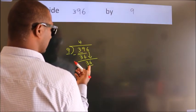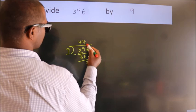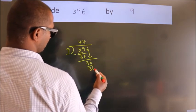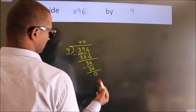When do we get 36? In the 9 table, 9 times 4 is 36. Now we subtract. We get 0.